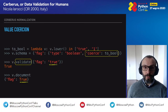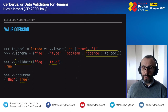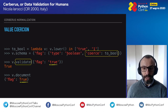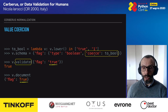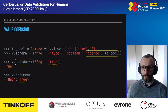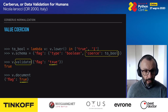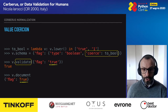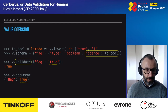Value coercion lets you transform a field's type. For example, a flag field of type boolean with a coerce rule: if the document has a value of 'True' as a string rather than a real boolean, the coerce rule will transform it to an actual boolean.